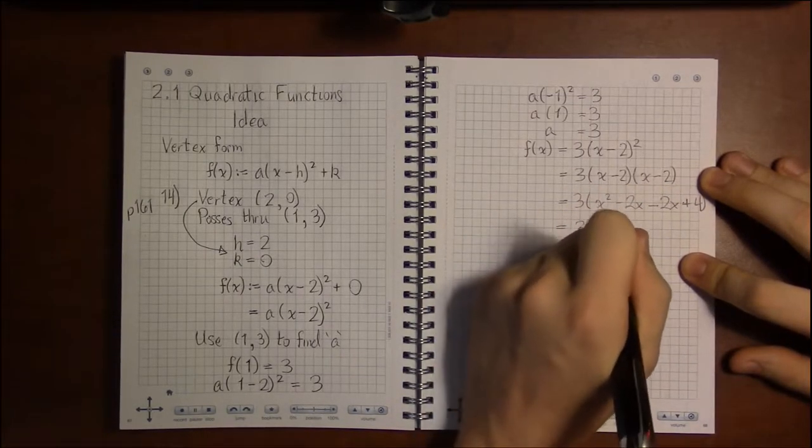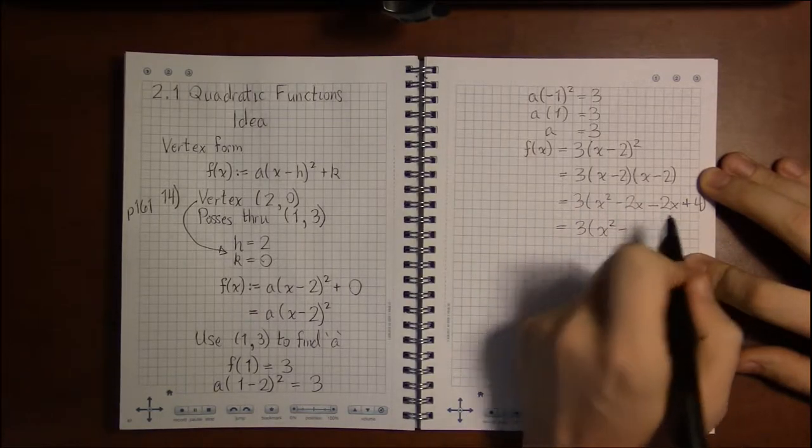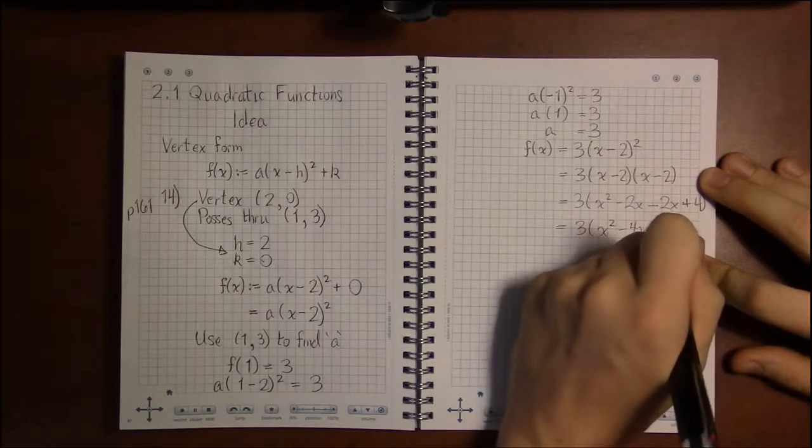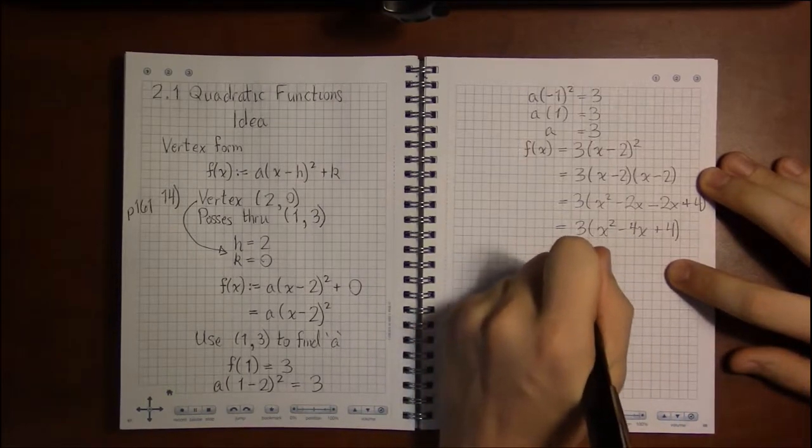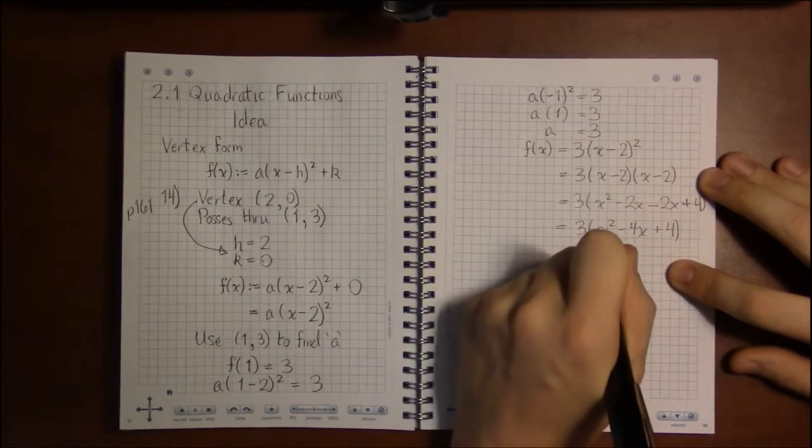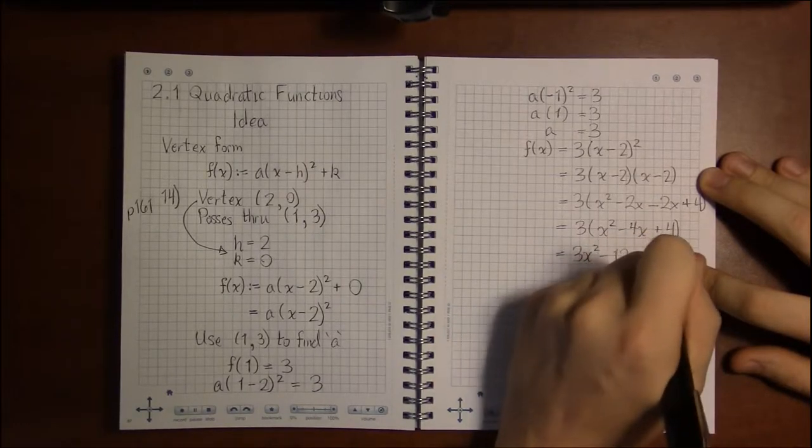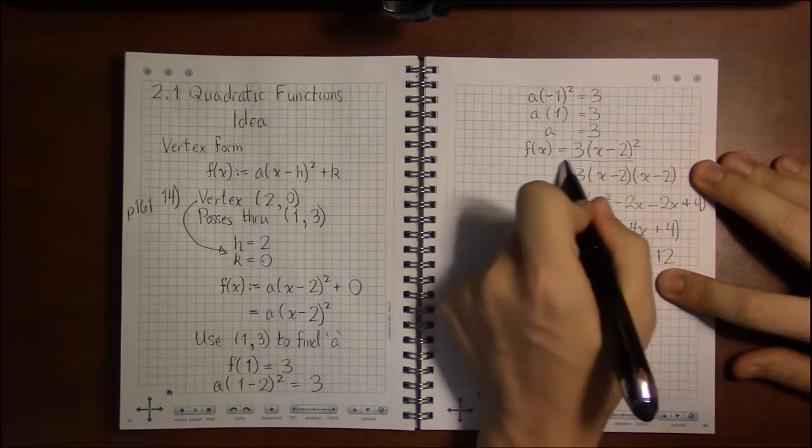So we have 3 times the quantity (x² - 4x + 4). Then you can distribute the 3 to get to standard form: 3x² - 12x + 12.